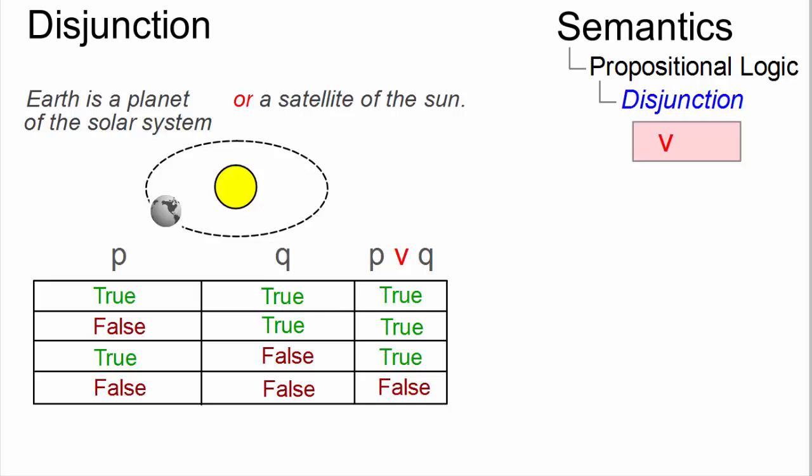Thus, the truth value of a complex proposition linked with OR is determined by the truth values of its component propositions. It is true if at least one disjunct is true.